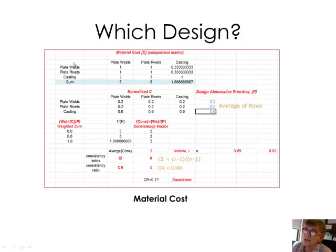So I'm looking at material costs here. And so, again, I have my A criteria and B criteria. And so I can see that when I'm comparing casting to plate welds, casting is moderately more favorable than the plate welds. So, again, I sum up the columns. I get 5 and 5, and then 1.67 under castings.